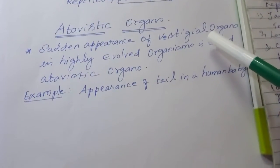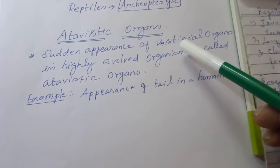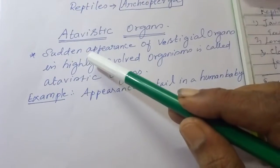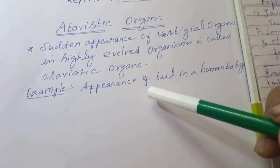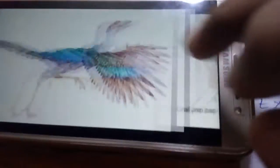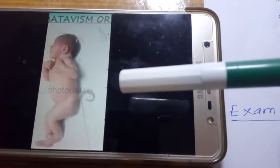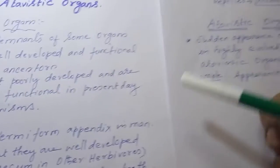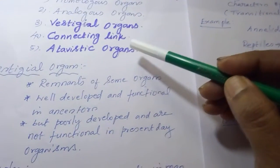The next concept is atavistic organs. These are the sudden appearance of vestigial organs in a highly evolved organism in a larger, somewhat functional structure. For example, the appearance of a tail in humans. You can see the baby in the picture — it is having a tail. This is called atavism, and it is also referred to as reversion.